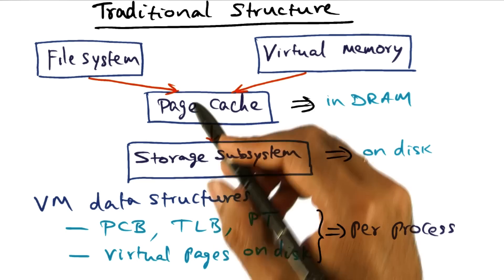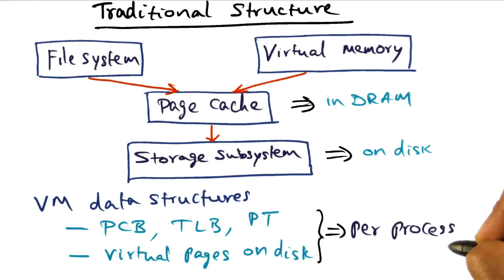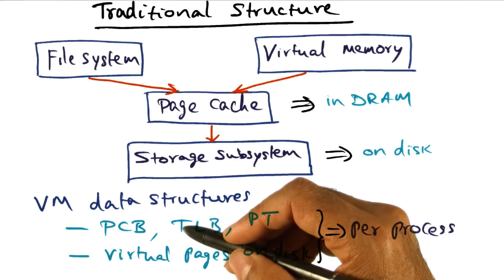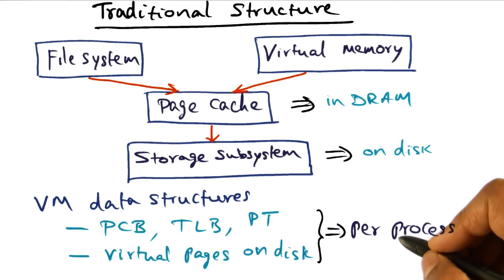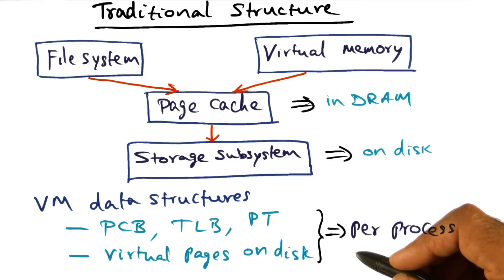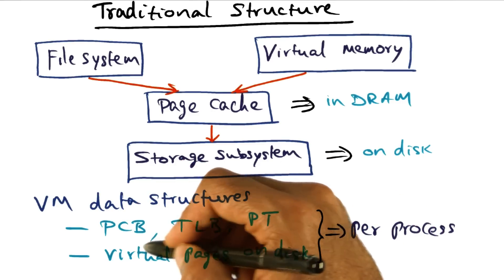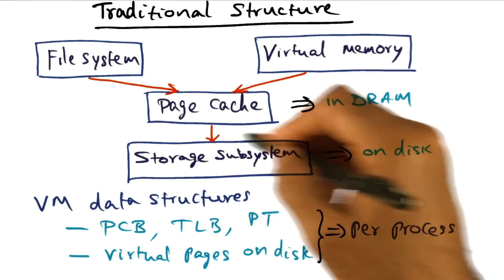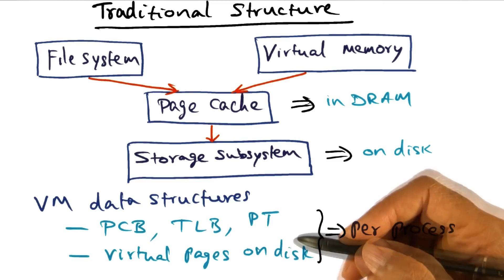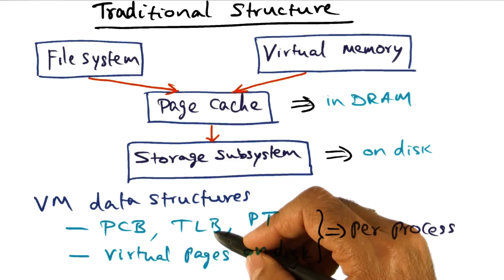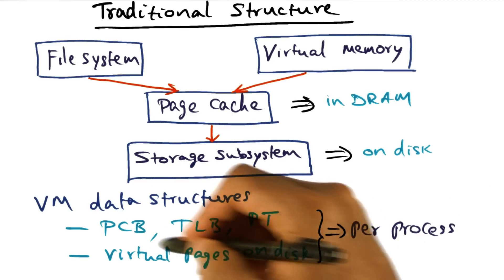For the purposes of our discussion, we will focus only on the virtual memory subsystem. In the virtual memory subsystem, the data structures kept per process in a traditional structure are: there is a PCB — a process control block — that contains information specific to that particular process in terms of memory management and the memory footprint of the process. There is also a page table that describes the mapping between the virtual pages occupied by the process and the physical memory allocated in DRAM by the operating system for backing those virtual pages. And if the operating system is also managing the TLB in software, there may be a global data structure that describes the current occupancy of the TLB for that particular process.